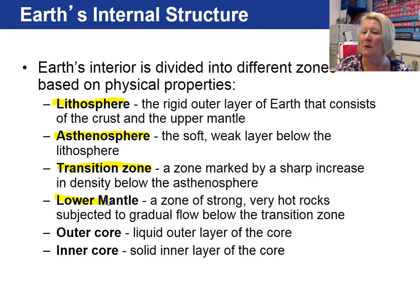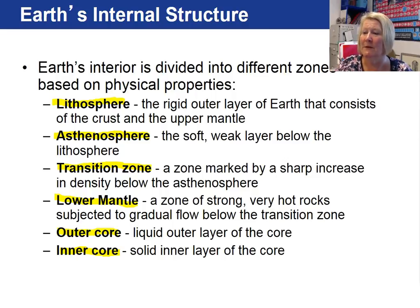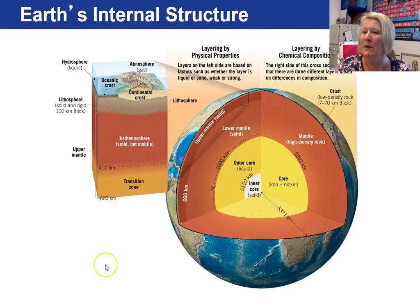We have our lower mantle, which consists of strong, very hot rocks that flow. And then finally we have our outer core, which is a liquid, versus our inner core, which is a solid. So the physical property that varies between the outer and inner core is their state — liquid versus solid. Here's an image of our Earth breaking it up into the physical layers versus our chemical or compositional layers.